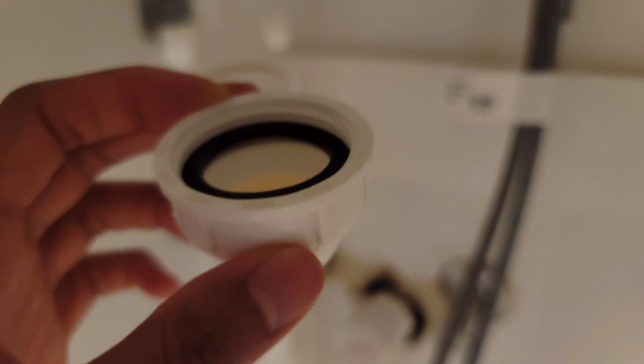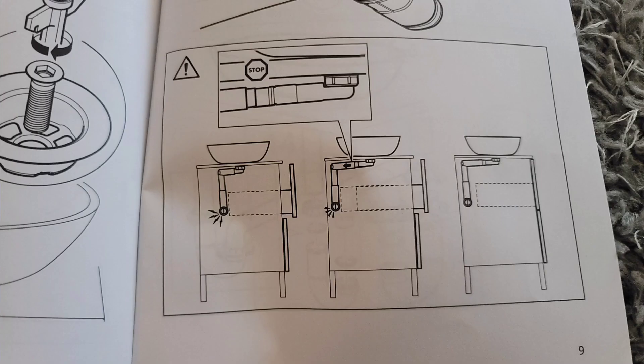Step eleven is saying to now attach that part that we saw in the beginning of the video to the little screw underneath the sink. This image is just showing you that it is adjustable, so you can pull it in or out, so that way it doesn't hit your drawers.